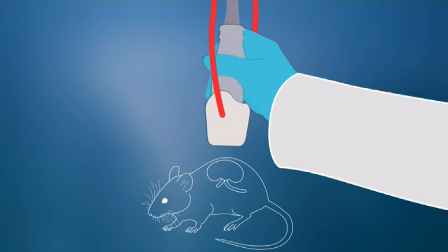The principle of the photoacoustic effect is simple. Nanosecond pulsed laser light is used to illuminate the tissue. Chromophores such as hemoglobin and red blood cells absorb the light, which causes local heating and thermoelastic expansion.